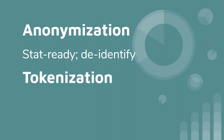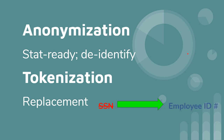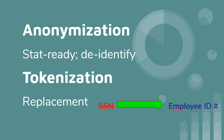Tokenization is a little different. Tokenization refers to replacing the information. If you had a database of your company's employees and you wanted to tokenize it, you would replace the SSN with a fake or fictitious employee ID number — something very generic that couldn't be used anywhere else. For example, someone couldn't take that employee ID number and go to the Social Security Administration or open a credit account under your name.